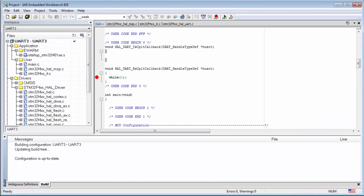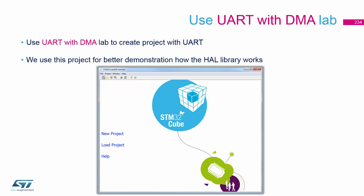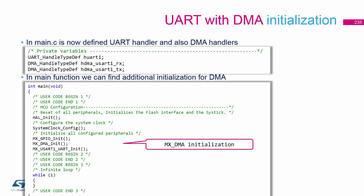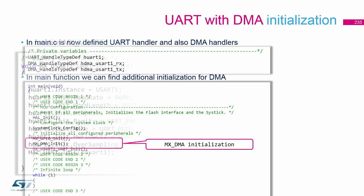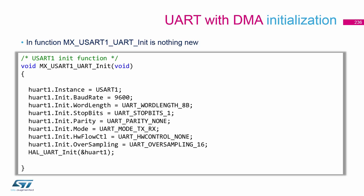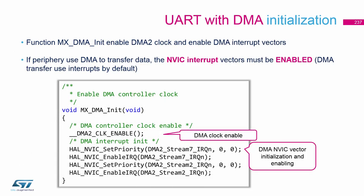This was the DMA example with UART — it is not much more difficult than the interrupt approach. To summarize from a theoretical point of view: what is new here is the DMA initialization. The UART initialization is the same. In the DMA initialization we enable the DMA and enable the interrupts from the DMA, because the DMA must notify us when the transfer ends.